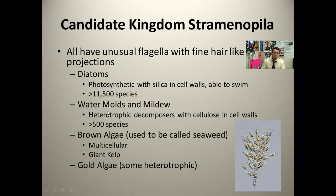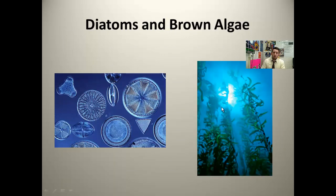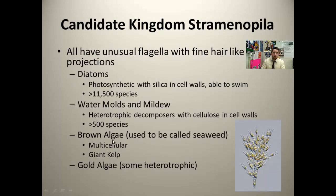Mildew and water molds — you might think this is a fungus. But recall, fungi have a polysaccharide called chitin in their cell wall, and that's what makes them a fungus. These particular organisms have cellulose, so they can't be classified as a fungus if they don't have chitin in their cell walls. Brown algae — it used to be called seaweed. We're talking about kelp, the large kelp fields off the west coast where you can always see the otters swimming around. That's brown algae — it's not a plant.